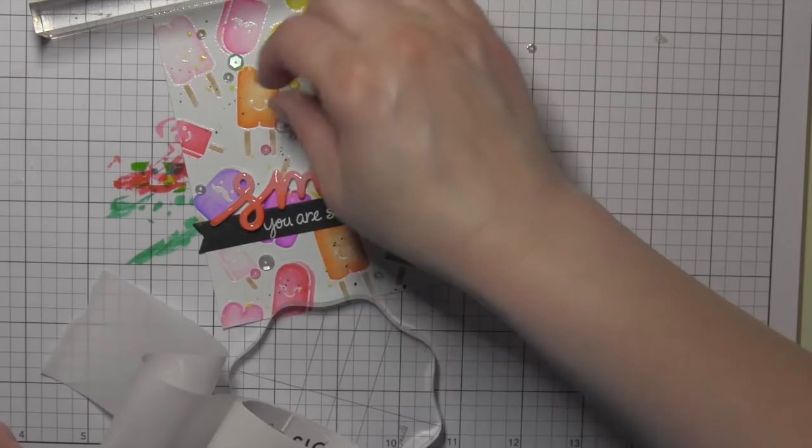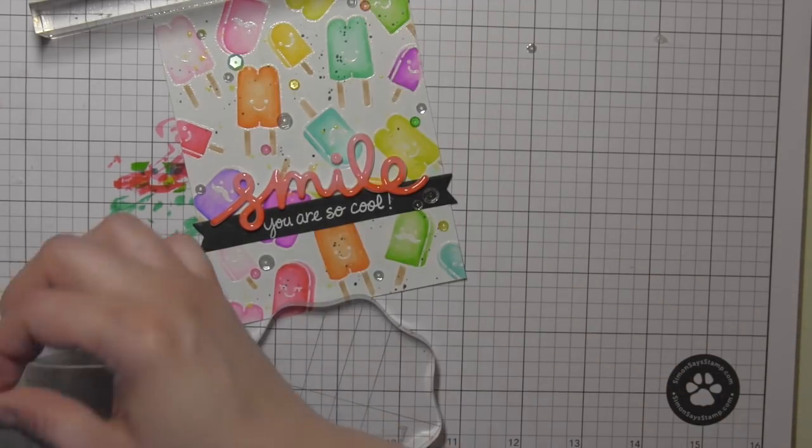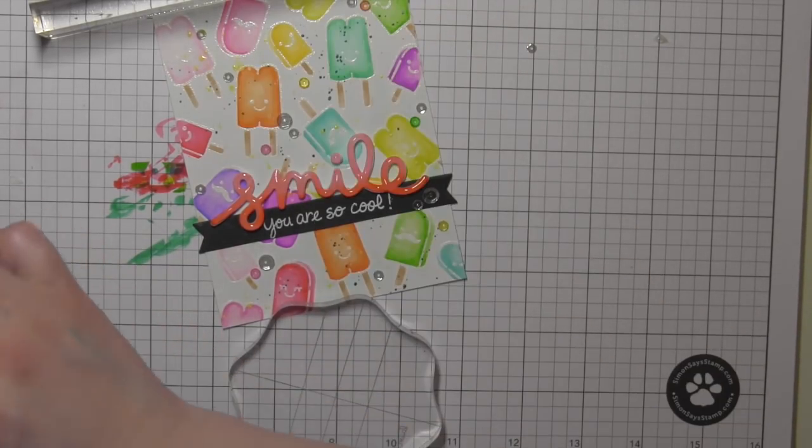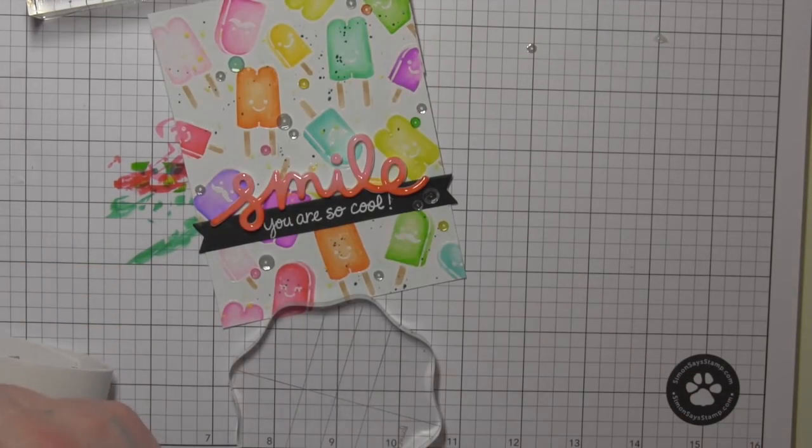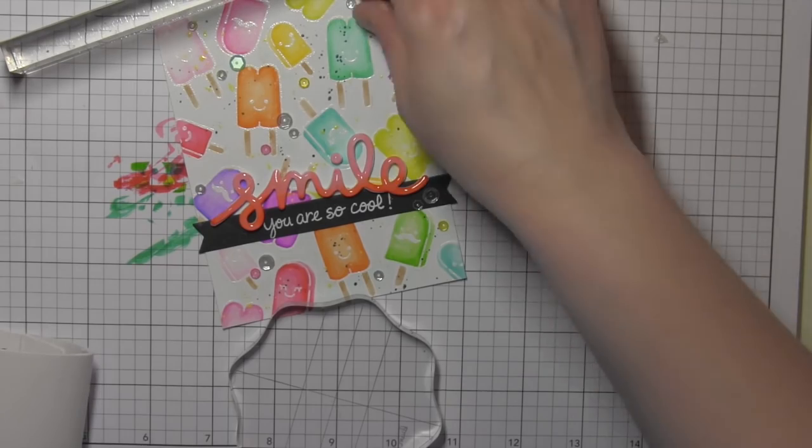And again I am just using an assortment. There's some clear ones, there's some colored ones. I just wanted it to be really sparkly and fun and coordinate back to the colors of the watercolored popsicles.